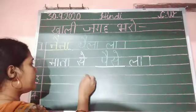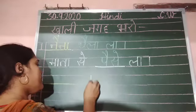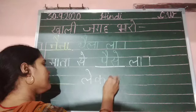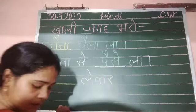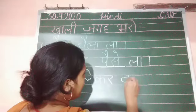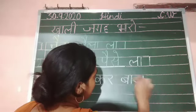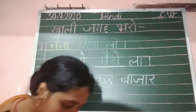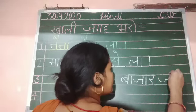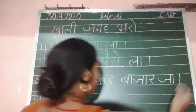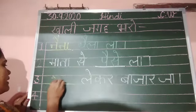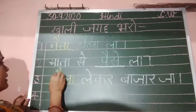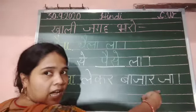Number 3 is the first blank: 'la par aa ki maatra' — la, 'la par aa ki maatra' — la, 'la par aa ki maatra' — la. The word is थैला (thaila). The sentence is: थैला लेकर बाजार जा (thaila lekar bazaar ja).